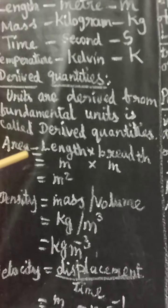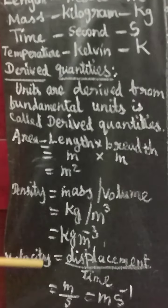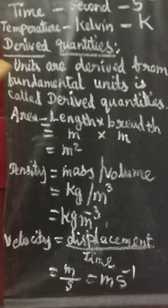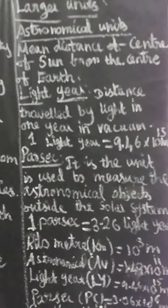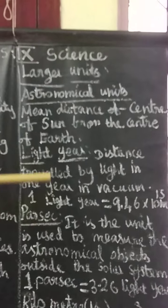So, derived quantities are quantities derived by using fundamental quantities. The examples of derived quantities are: area, density, and velocity.